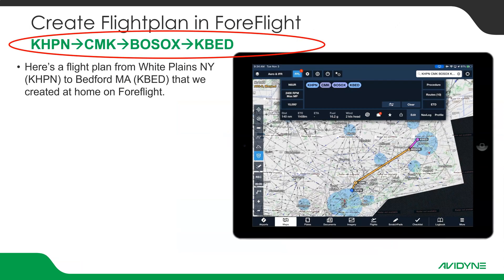Here's a sample flight plan from White Plains, New York — HPN — to CMK, to Bosox intersection, and onto KBED, which is Hanscom Field in Bedford, Mass. We've created that on ForeFlight at home in the comfort of our home, and now we're going to go out to the airplane.